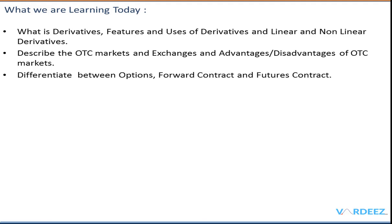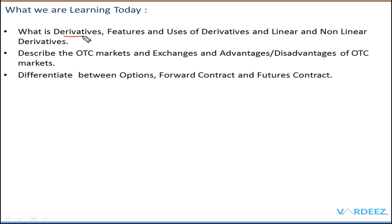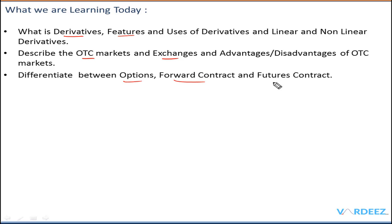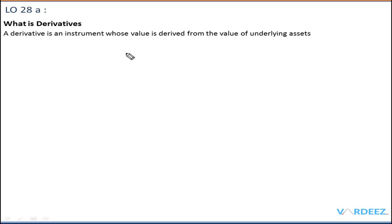So what are we learning today? We'll be talking about what derivatives are, what the features and uses of derivatives are, we'll also be looking at the OTC markets — what exactly is the over-the-counter market — and we'll be comparing that with exchanges. We will also be comparing the different types of derivatives: options, forward contracts, and futures contracts.